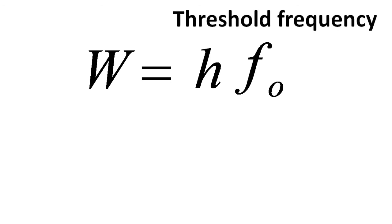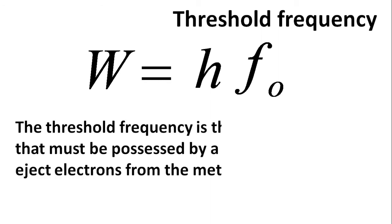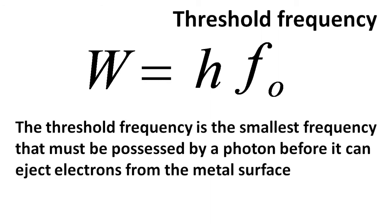We can define the threshold frequency of a metal as the smallest frequency that must be possessed by a photon before it can eject electrons from the metal surface. Perfect.